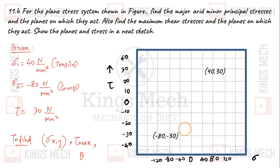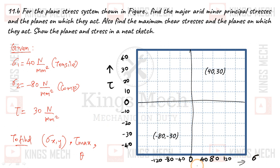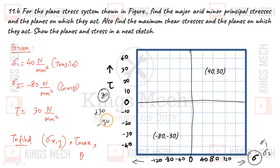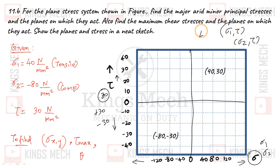Now we draw the Mohr's circle diagram. We plot the stress values: sigma 1 is 40, sigma 2 is minus 80. The shear stress tau is common at 30 — positive 30 and negative 30 — plotted from zero. So our points are: (sigma 1, tau) = (40, 30) as the first point, and (sigma 2, minus tau) = (minus 80, minus 30) as the second point at the bottom. These two are the diagonal extreme points of the circle.